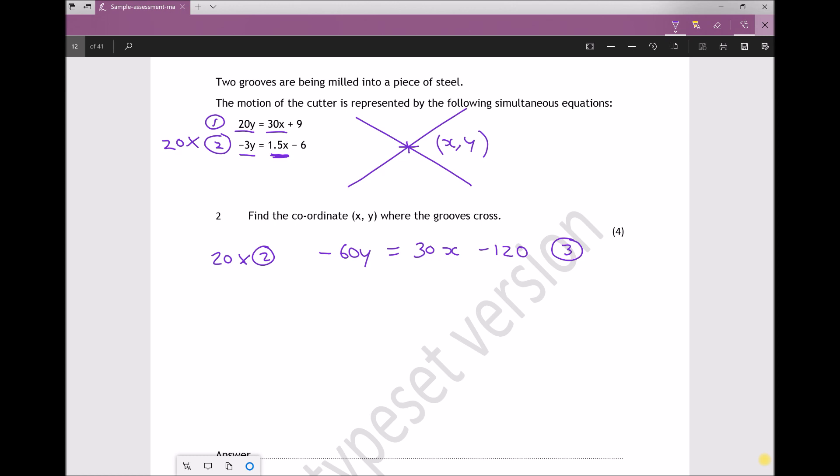Now the next function that I need to do is either to subtract equation 3 from equation 1 or subtract equation 1 from equation 3. Either of those functions will eliminate the x variables. So let's rewrite equation 1 down here. Equation 1 was 20y equals 30x plus 9. What I'm going to do is equation 1 minus equation 3. I could just as easily have done that the other way round, but by doing it this way, all of my terms are going to remain positive.